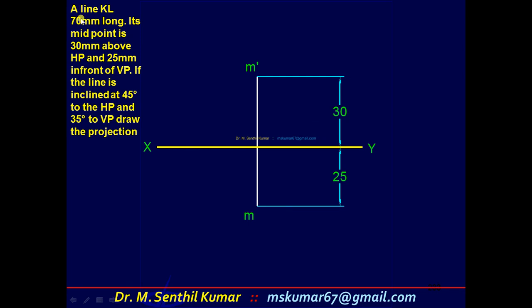The next step, consider this length, true length 70 and theta 45. Draw a 45 degree line on it. Mark K1 dash and L1 dash such that K1 dash M dash is equal to 70 by 2, 35 and this side 35. This is preliminary front view. Complete the preliminary front view set.